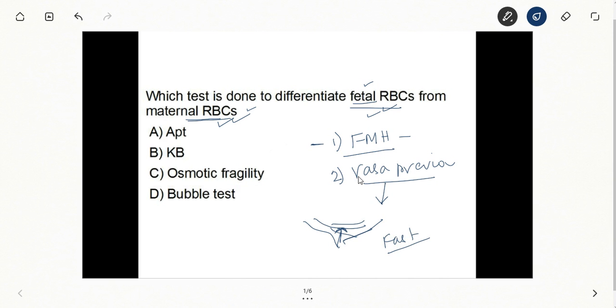Kleihauer-Betke test, as you all know, it is used to quantitate fetal-maternal hemorrhage. And this test is going to take 45 minutes because you have to count at least 2000 fetal cells before you give the percentage. So this is out of question. We cannot take 45 minutes and we do not need to quantitate.